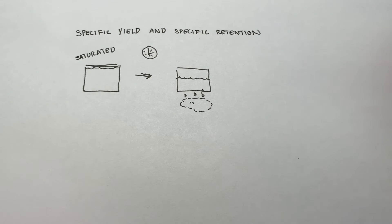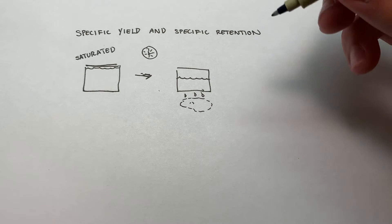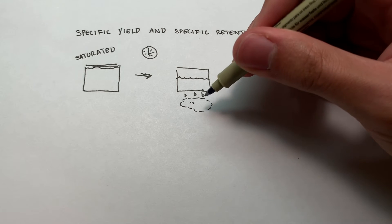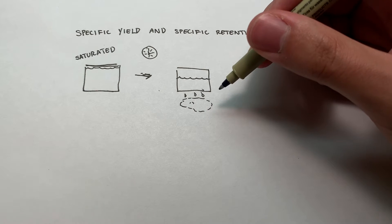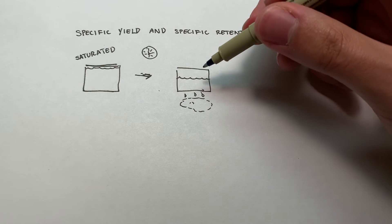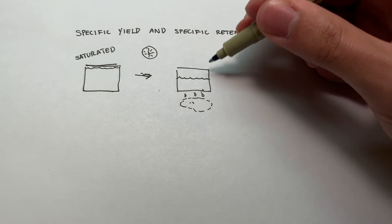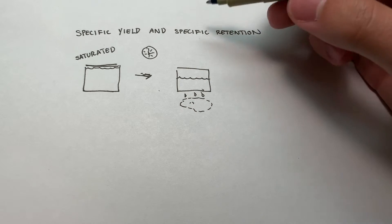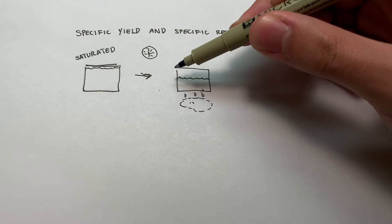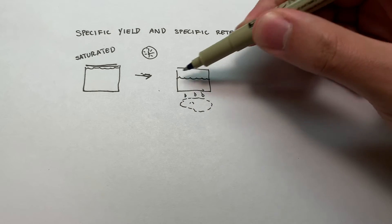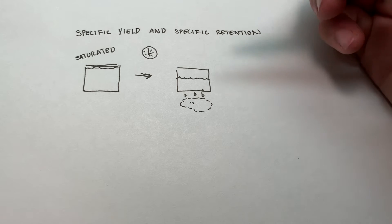Well, this is where we first get into specific yield and retention, and the two are very much related. Specific yield is going to be the volume of this water that's drained out. And the word specific should cue you in. That is per unit volume of the sample. And retention is going to be the volume of water that is retained, the remainder in here divided by the volume of the sample.